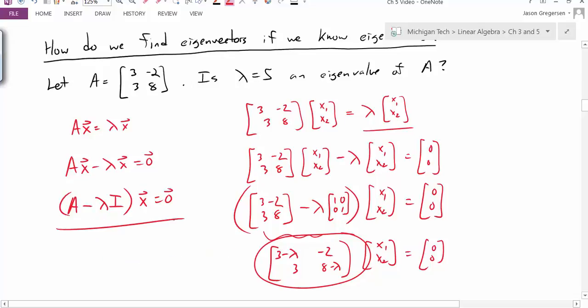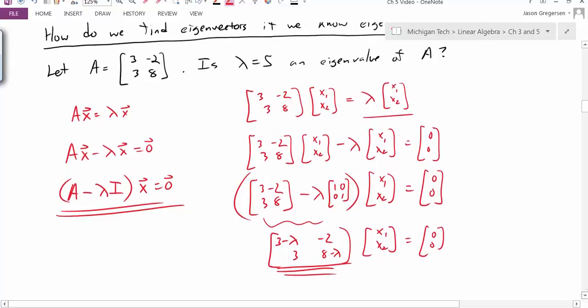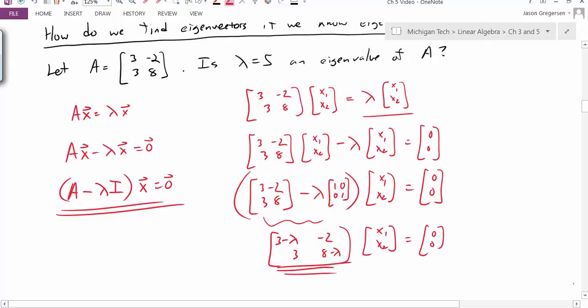And so this is the matrix right here that really is this A minus lambda I piece. So we are going to work with this equation when trying to find eigenvalues and eigenvectors. And really when you see that A minus lambda I, I want you to see this matrix: a matrix A with lambda subtracted on the diagonals. And so now, now we can go ahead and answer our original question.